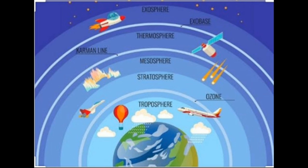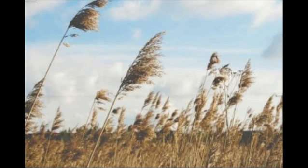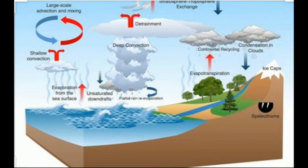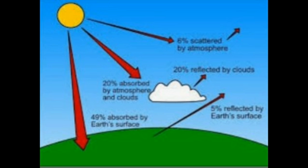The troposphere is the layer closest to the earth — it is the layer in which we live. It extends upward about 60 km above the surface of the earth. Movement of wind takes place in this layer. It also contains water vapor which is responsible for making clouds. This layer is responsible for the weather we experience on earth.